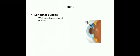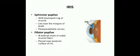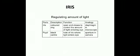The iris contains a circular muscle called the sphincter pupillae — a well-developed ring of muscle near the margin of the pupil, supplied by parasympathetic nerves. The dilator pupillae is an ill-defined sheet of radial muscle fibers placed near the posterior surface of the iris, supplied by sympathetic nerves.